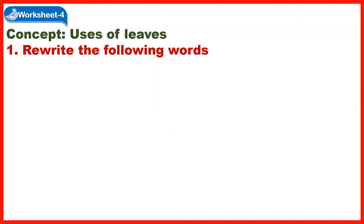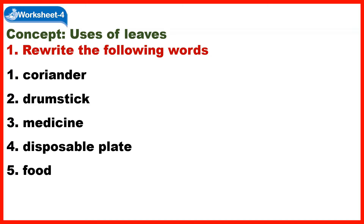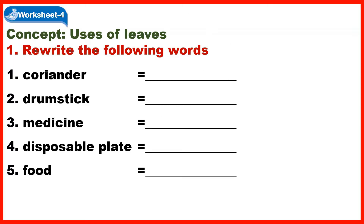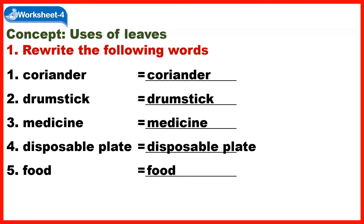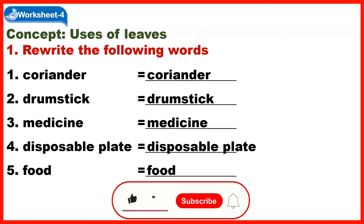Worksheet 4 Concept: Uses of Leaves. Section 1 – Rewrite the following words: Coriander, Drumstick, Medicine, Disposable Plate, Food.